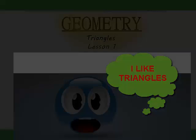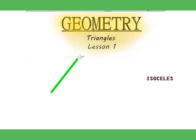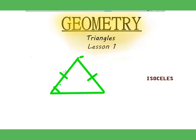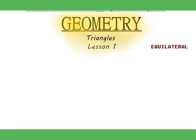So the first type of triangle we will go through is the isosceles triangle. The isosceles triangle has two equal sides, and therefore two equal angles at the bottom. When I talk about isosceles triangles later on in another lesson, I'll tell you why and how you can calculate angles in this.